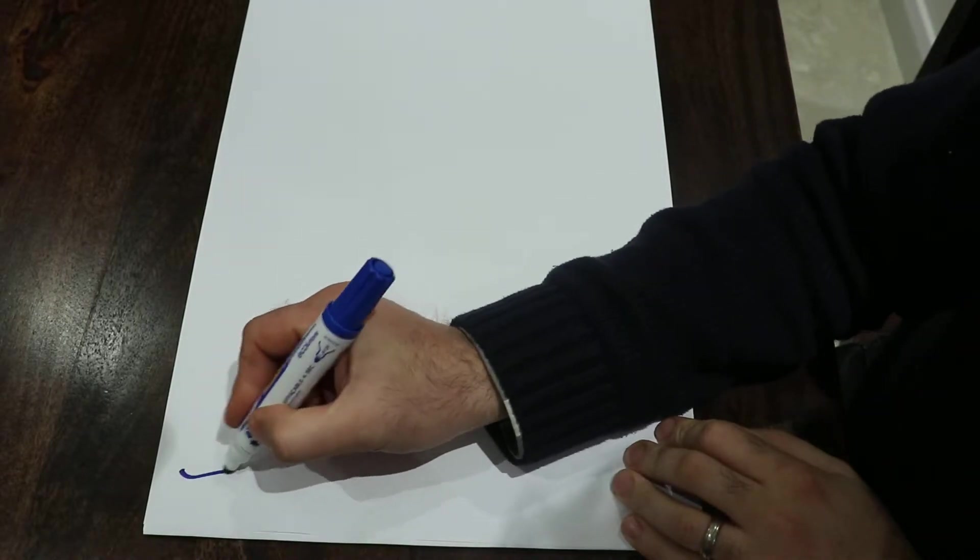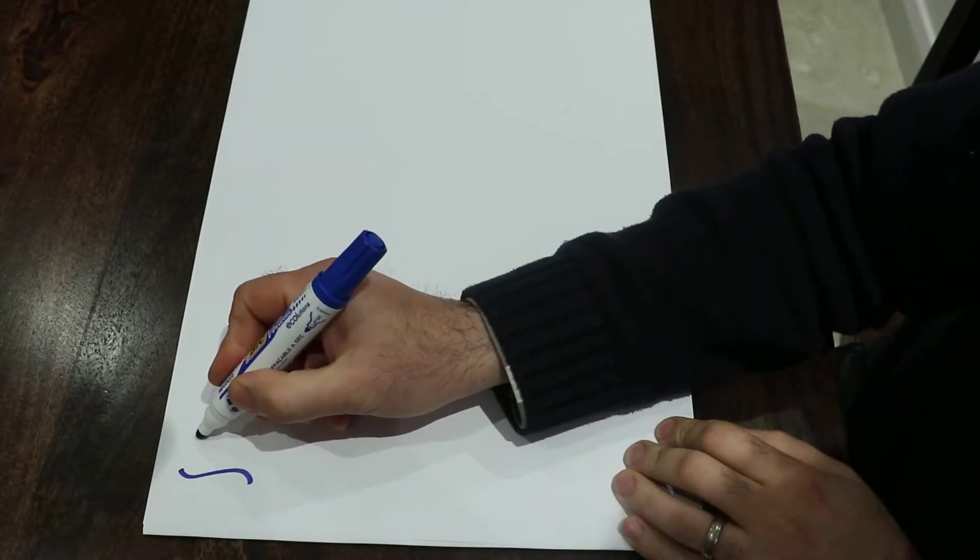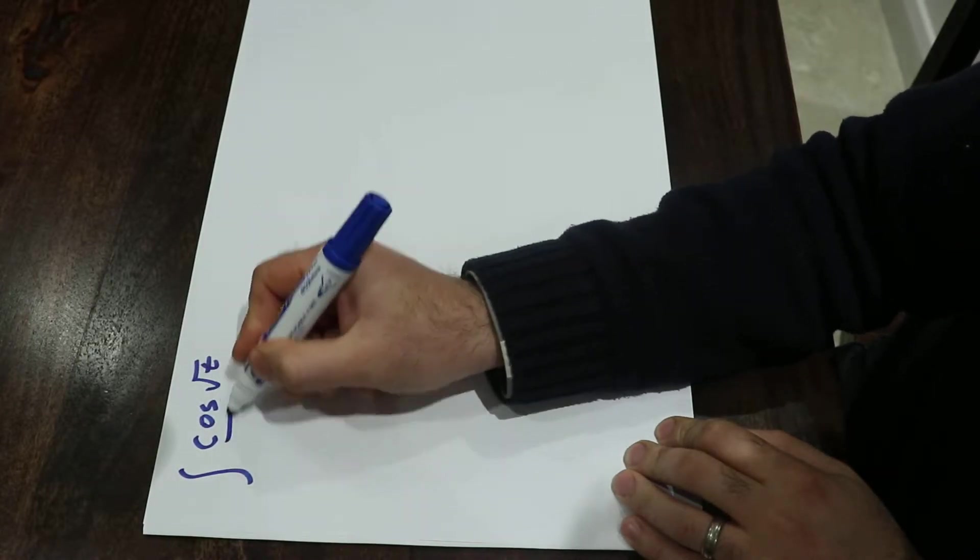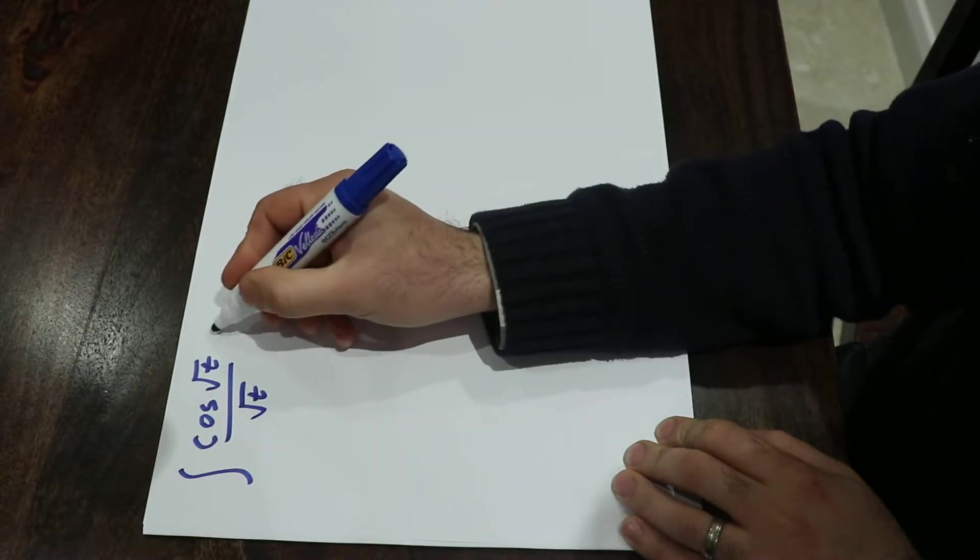Hello everybody, today I'm going to show you how to take the integral of cosine s square root of t divided by s square root of t dt.